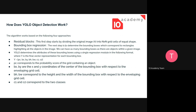The next step is bounding box regression. One of the unique characteristics of YOLO is that it develops a bounding box for objects in the image — a rectangle highlighting each object. There can be as many bounding boxes as there are objects within a given image, and YOLO determines the attributes of each bounding box using a single regression module.